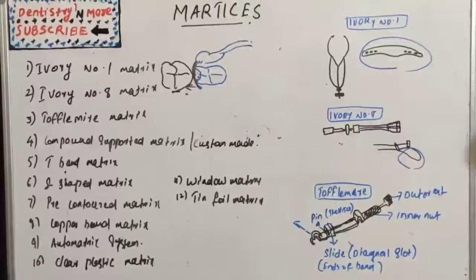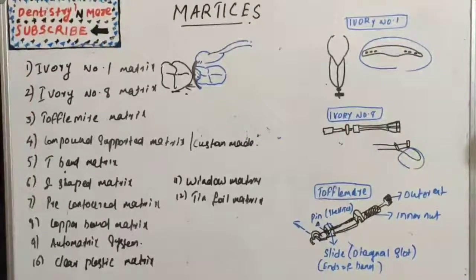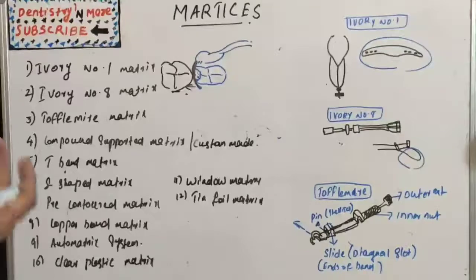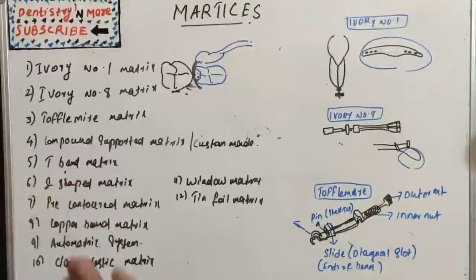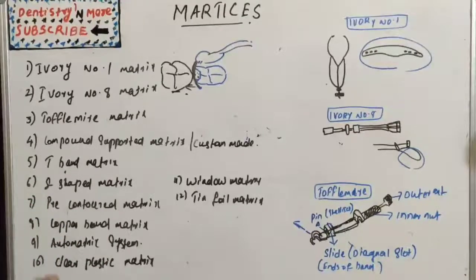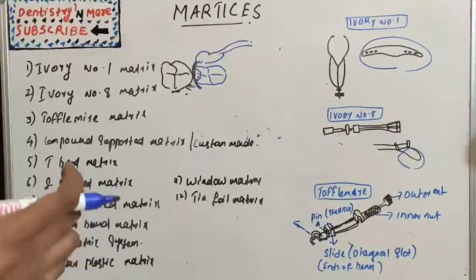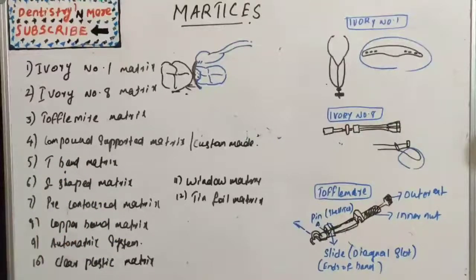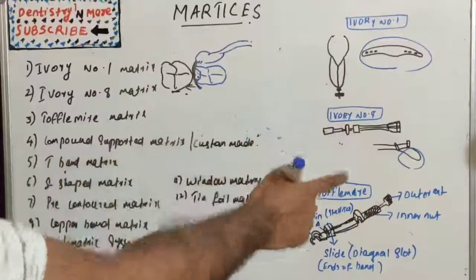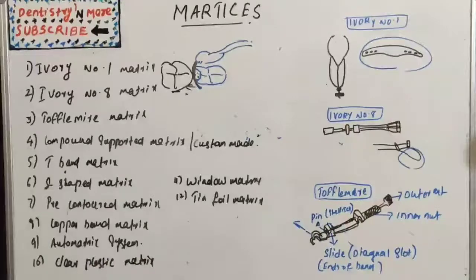Now let's move to the classification of matrices. Classification by type of band material includes stainless steel, copper band, cellulose acetate, and polyacetate. By preparation type: mechanical matrix includes ivory number one and ivory number eight; custom-made or anatomic matrix includes compound supported matrix. By mode of retention: with retainer (ivory number one, eight, and Toffelmyer) and without retainer (auto matrix).